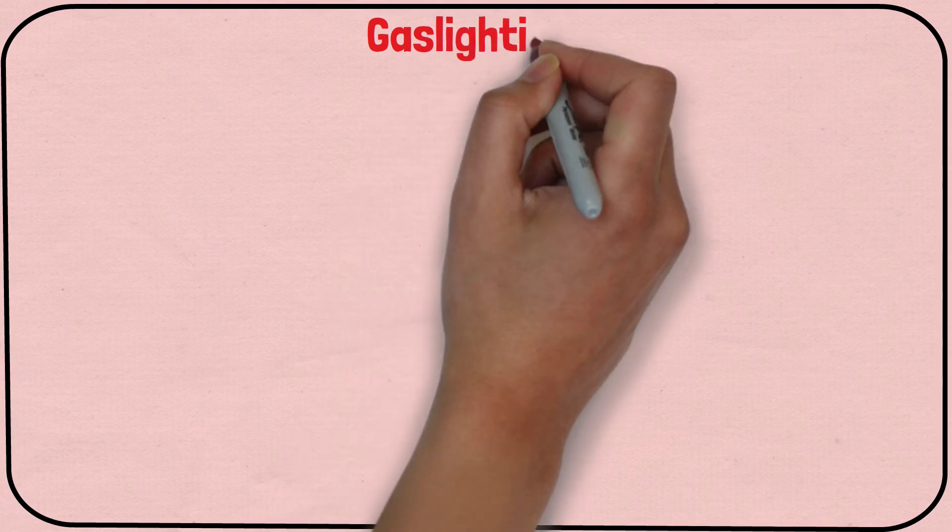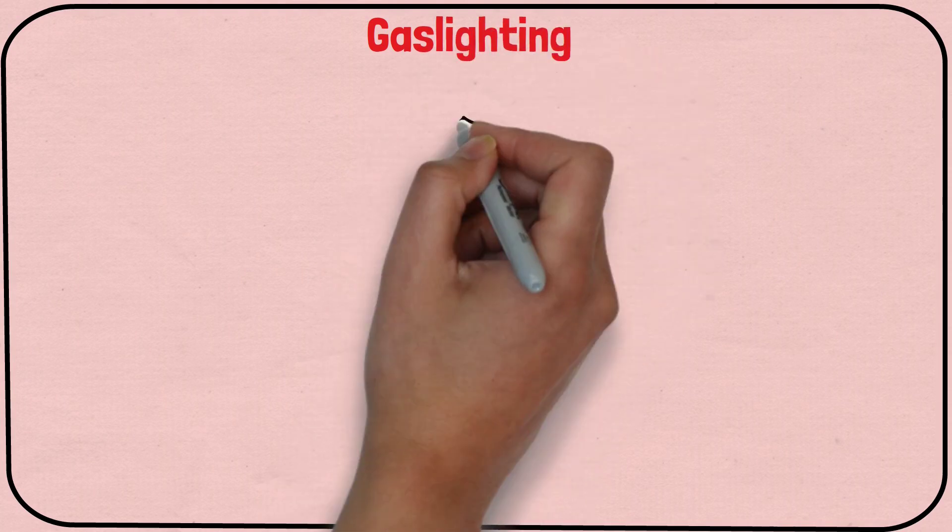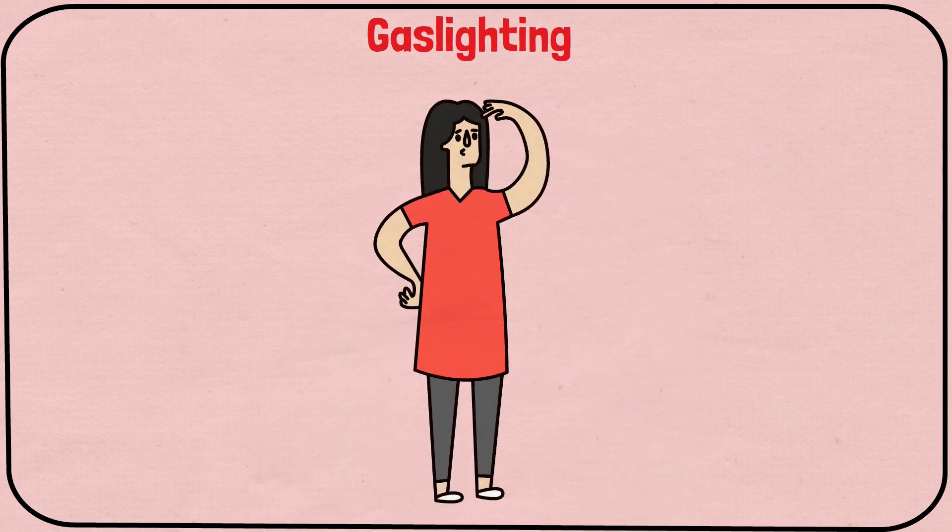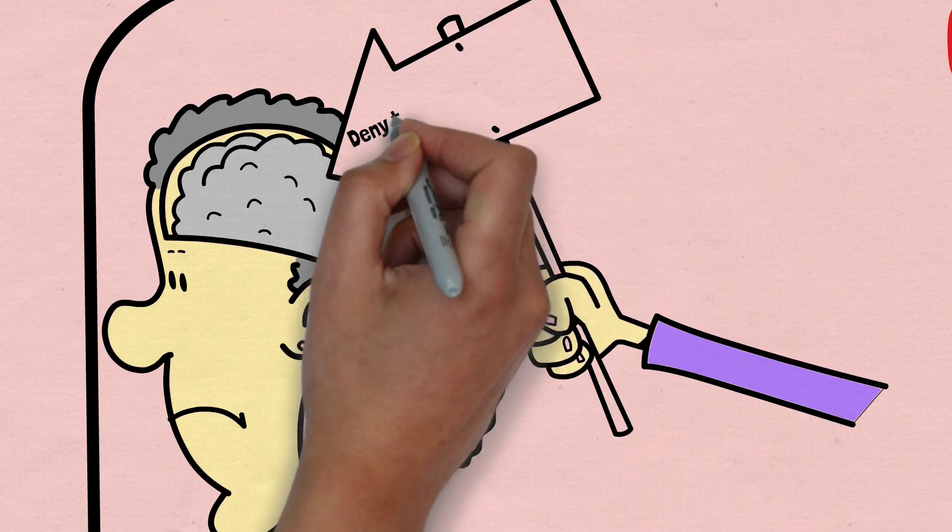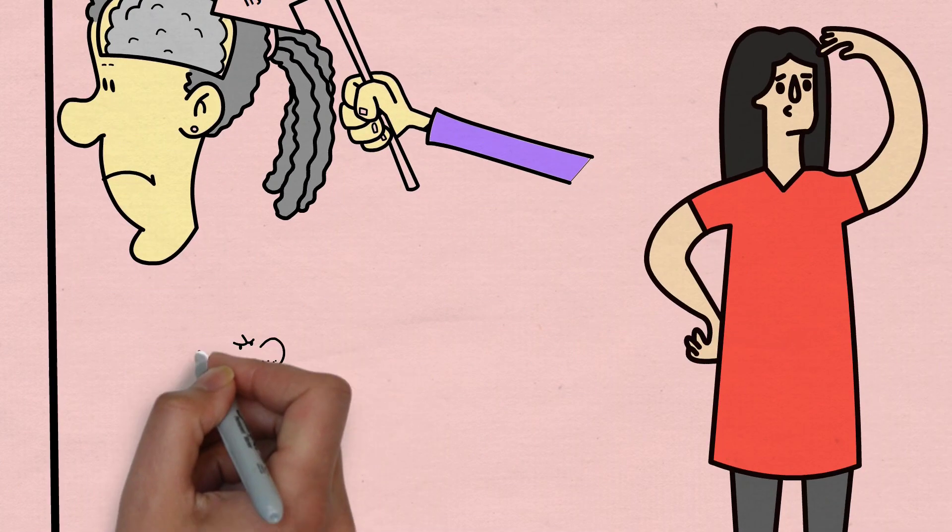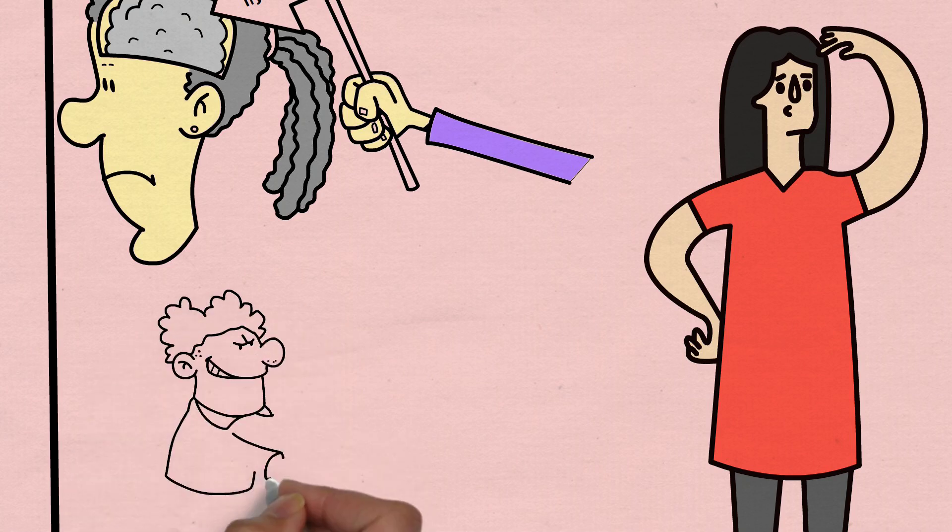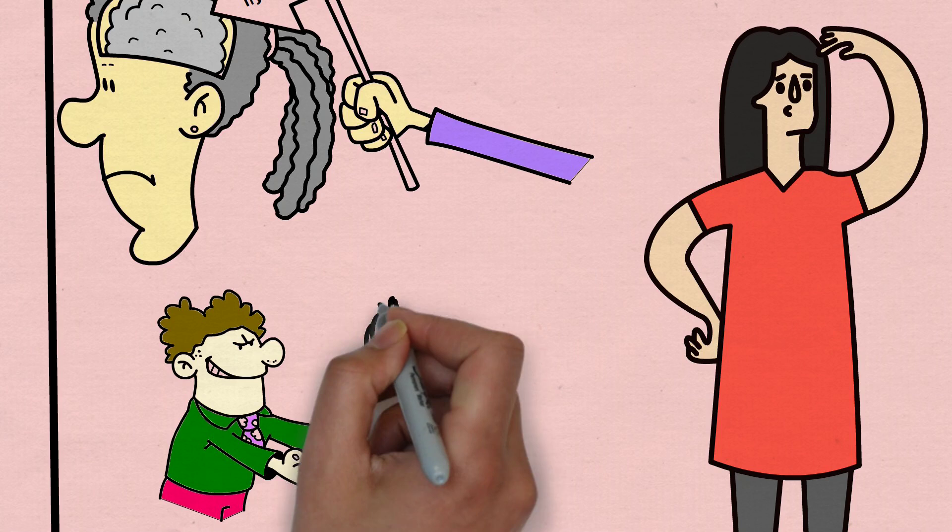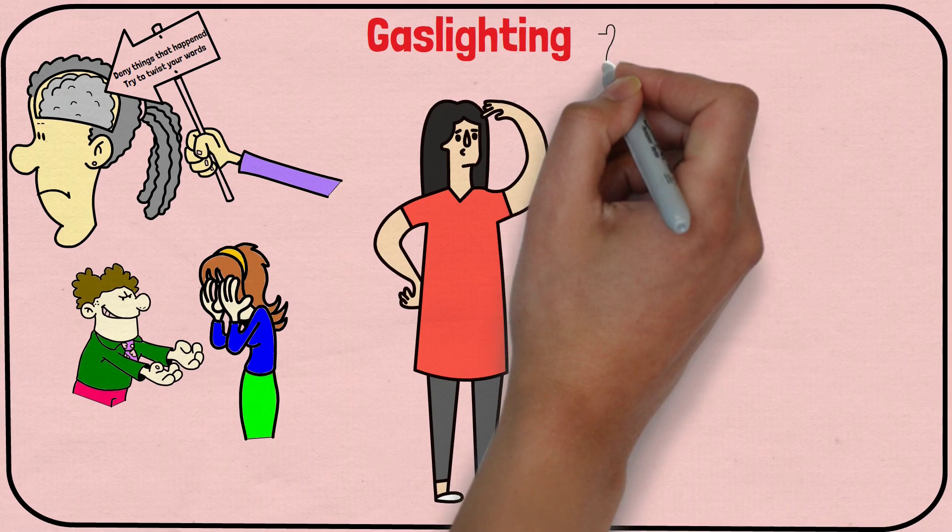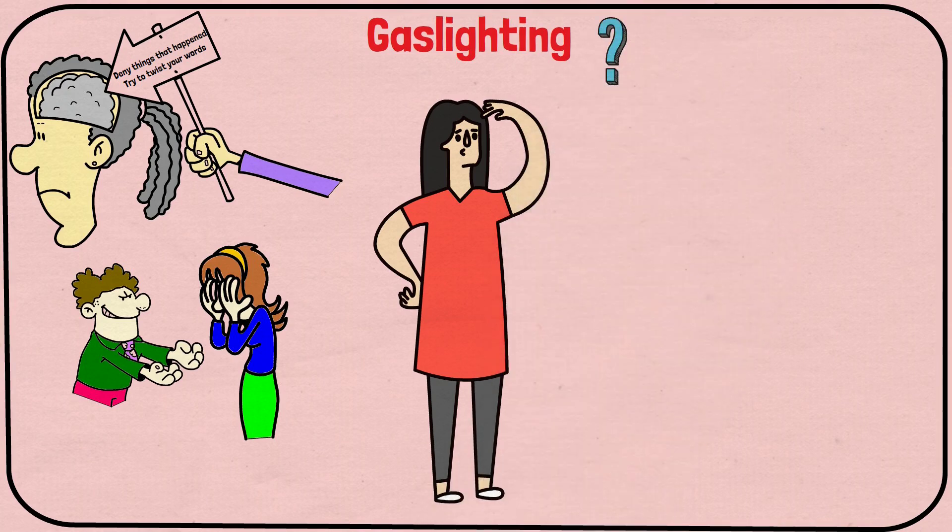Gaslighting is another red flag to pay attention to. And by gaslighting, I mean when your partner tries to make you doubt your reality and memories. They might deny things that happened, or try to twist your words. Gaslighting is a way for the abusive partner to control and manipulate the other. And it can be incredibly damaging to the victim's self-esteem and sense of self.